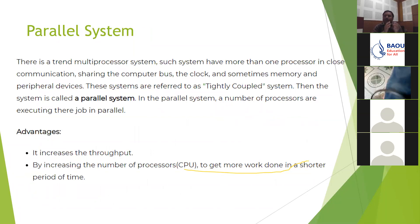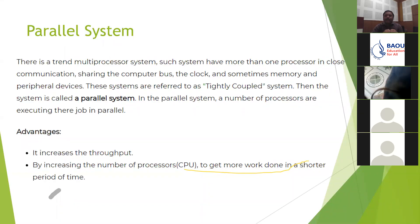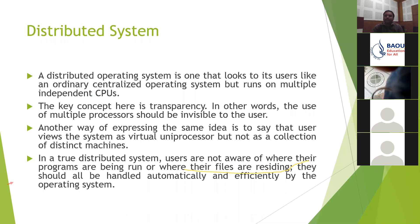Then comes parallel systems. You might have heard of dual-core, quad-core, and octa-core processors. Dual-core means two processors, quad-core means four, and octa-core means eight. Such systems have more than one processor in close communication, sharing a compatible bus, clock, and sometimes memory and peripheral devices. These are referred to as tightly coupled systems, also called parallel systems. The advantage is increased throughput — by increasing the number of processors, the CPU gets more work done in a shorter period of time.